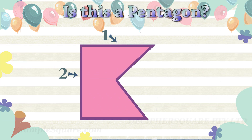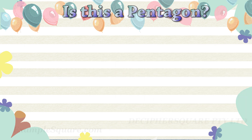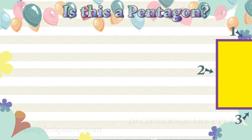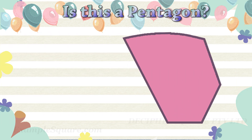Is this a pentagon shape? Yes, this is a pentagon shape — it has five straight sides and five corners. Is this a pentagon shape? Yes, this is a pentagon shape — it has five straight sides and five corners.